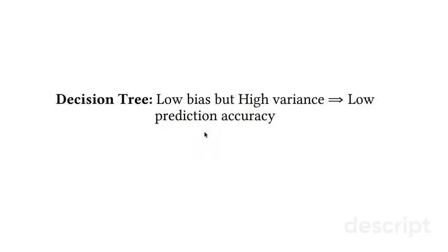Decision trees in general are low bias but high variance models. They change very drastically from sample to sample. And because of this, they can lead to a low prediction accuracy. Remember, bias variance trade-off. It could be that the decision tree brings too much variance, leading to a very poor prediction accuracy.